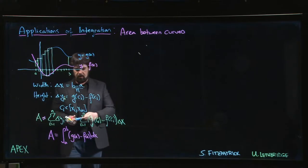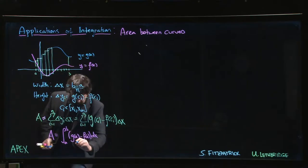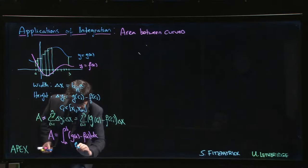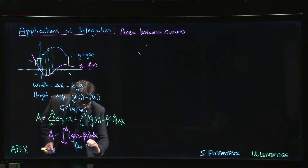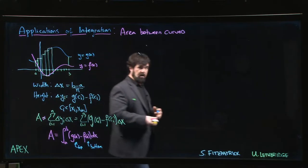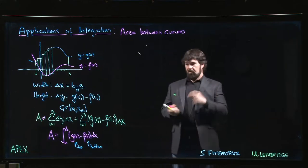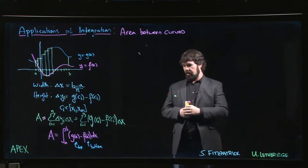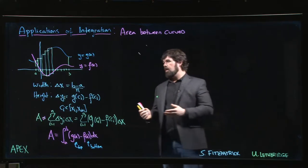The main thing to keep in mind when you're doing this is you're always doing the top curve minus the bottom. It's always upper minus lower to get the height of each rectangle, times your delta x. This gives you the area. We're going to do that integral.